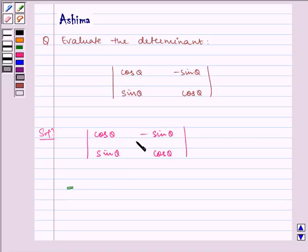This equals cos theta times cos theta minus sin theta multiplied by minus sin theta.